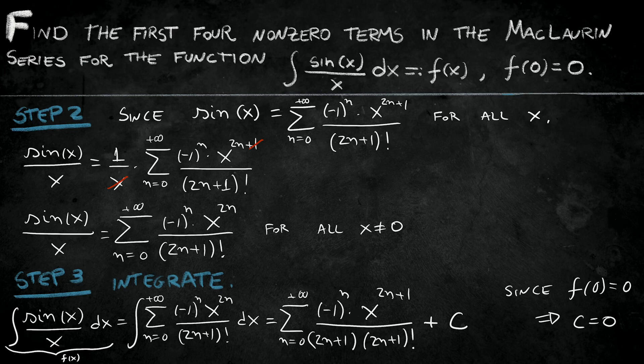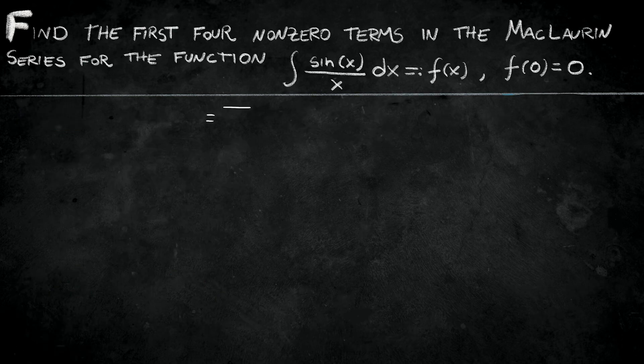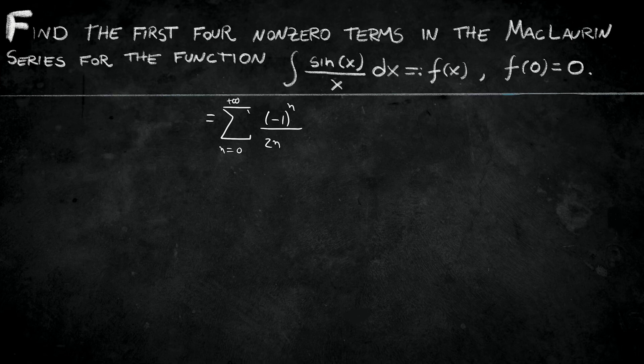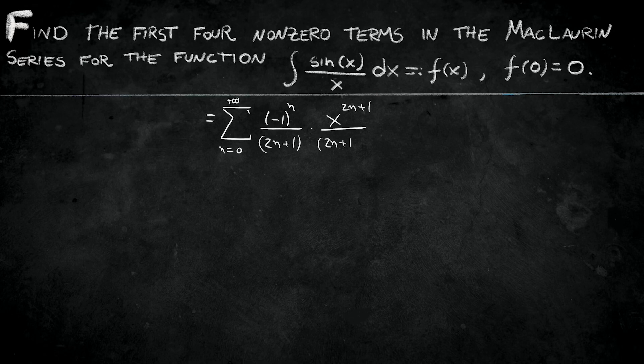It implies when I apply 0 here in my series, I'm only going to have c. It implies c is going to be equal to 0. Let's continue that. If I have the series describing as follows, we can write term by term. Let's plug n equals 0 and find the first term. Minus 1 to the power 0 is 1. 2 times 0 plus 1 is just 1. And 1 factorial is also 1. And then we're going to realize my first term is going to be only x.